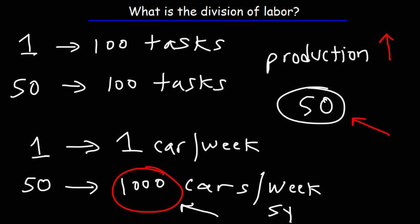Because of synergy and the division of labor, a company with a team of 50 can increase its output — the number of cars produced per week — significantly. That is one benefit of the division of labor: you get increased production for the same number of workers when all the tasks are divided, as opposed to having one person do everything.